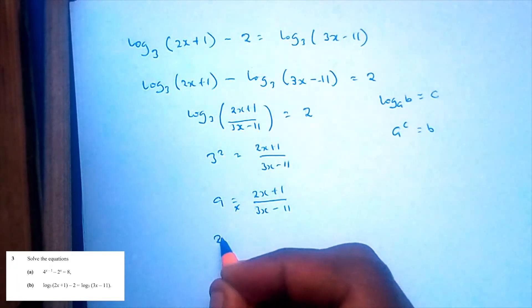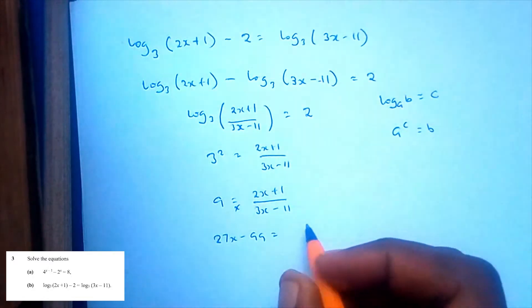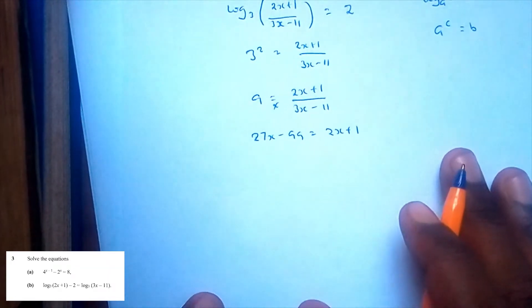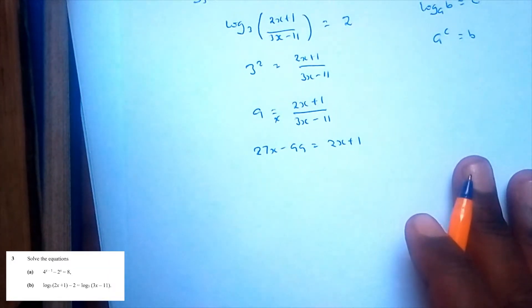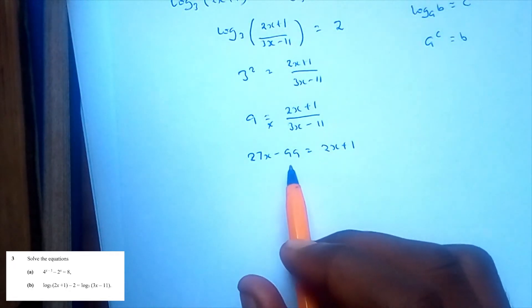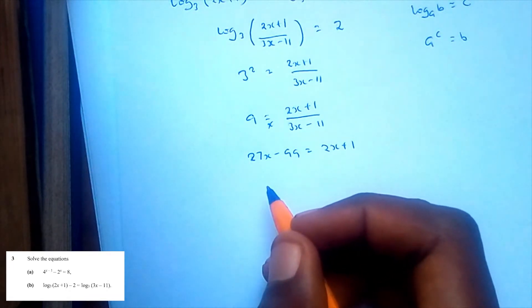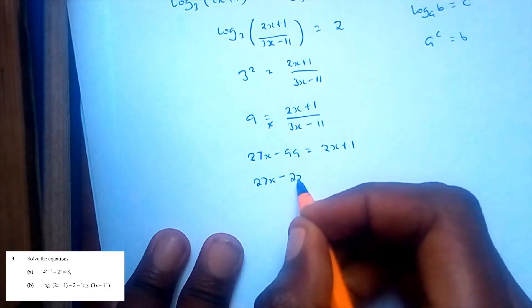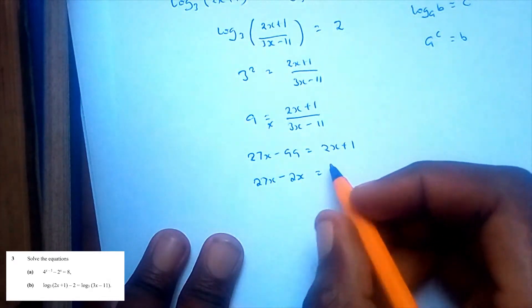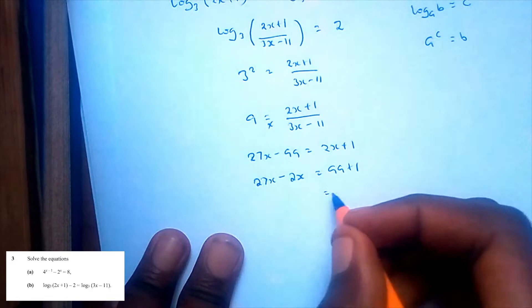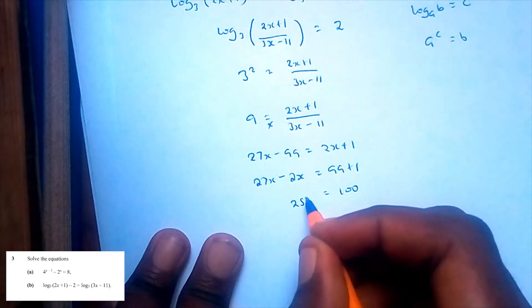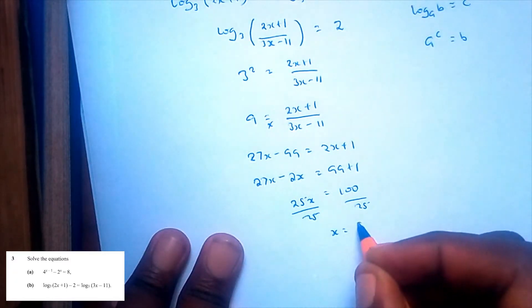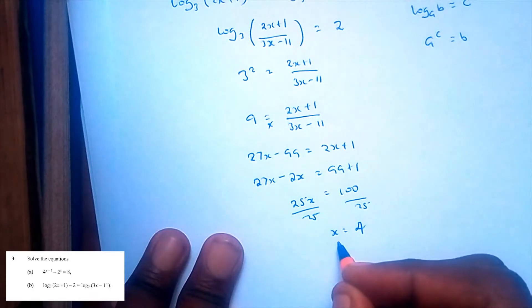Cross multiplying gives 27x minus 99 is equal to 2x plus 1. Rearranging: 27x minus 2x equals 99 plus 1, so 25x equals 100, and x is equal to 4.